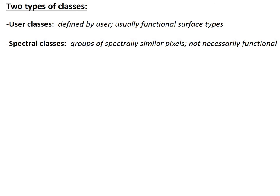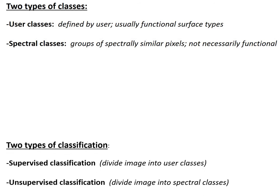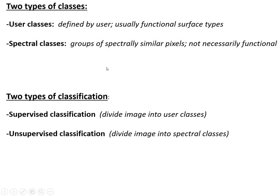There are two types of classes in classification. User classes are defined by the user — these are functional surface types like burned, unburned, water, rock. That's different from spectral classes, which are simply groups of pixels that are mathematically similar to each other, whether meaningful or not. In supervised classification we provide training data and the computer divides the image into user classes. In unsupervised classification, we do not provide any information to the computer at all — we don't tell it what user classes we're hoping to get; we just let the computer divide the image into spectral classes.